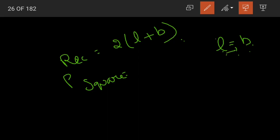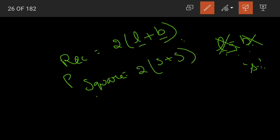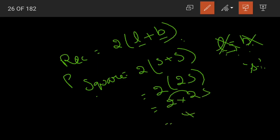In a square, we do not have separate length and breadth — we only have sides. All four sides of a square are equal. Instead of length and breadth, we write 'side'. Side plus side equals two sides, so 2 into 2 sides gives 4 sides. Therefore, perimeter of a square is equal to 4 into S.